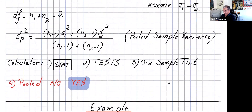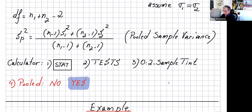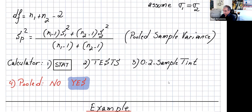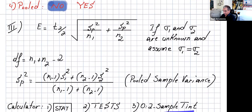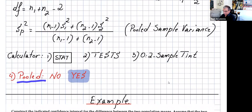For Case 3, definitely use the calculator because the hand calculations are heavy. Go to STAT, TESTS, scroll down to 0 for the two-sample t interval — same as Case 2. The difference is when it asks for pooled, say Yes instead of No, and the calculator will give you the interval.